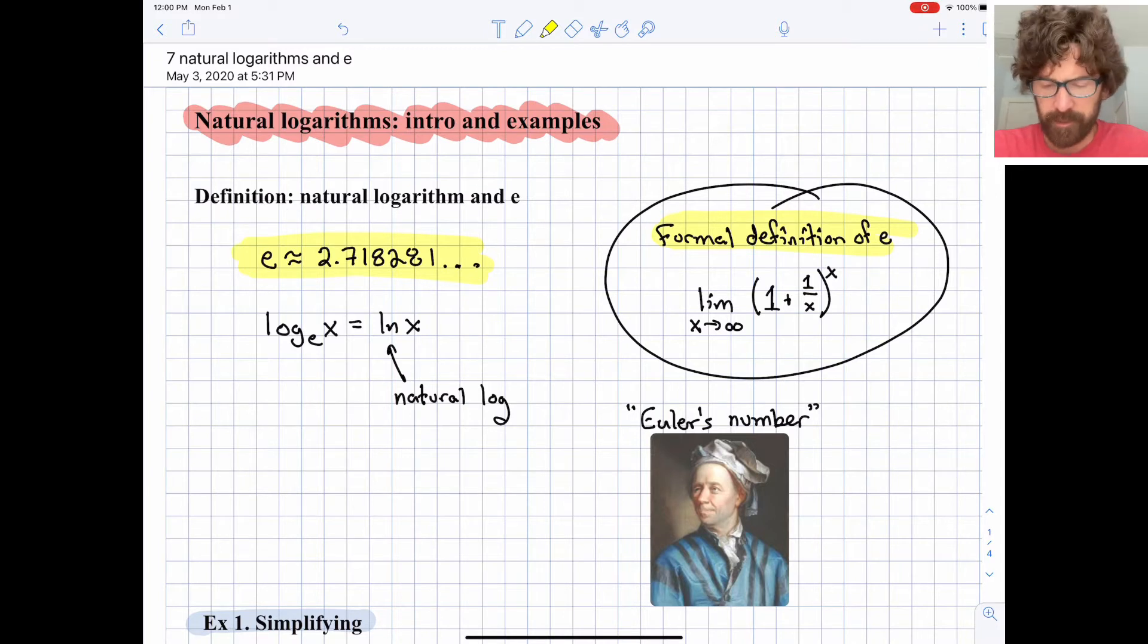It's equal to the limit as x approaches infinity. That terminology simply means imagine x being an incredibly large number. Of this expression, 1 plus 1 over x, all raised to the x power.